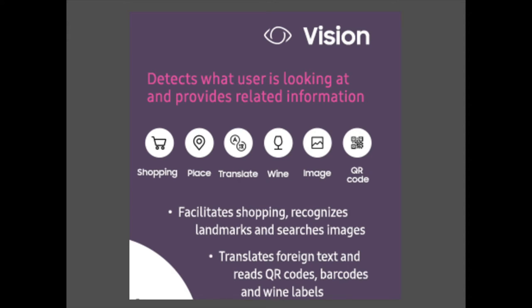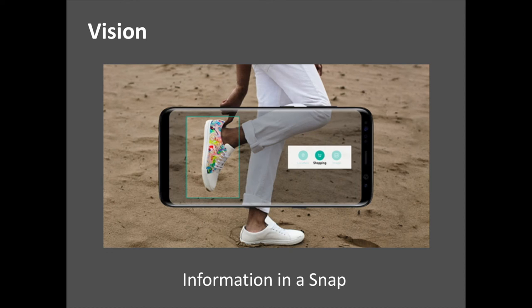Bixby uses the image to determine that the structure is a famous art museum and can then provide related information, such as the museum's address, phone number and website. At lunch, the user can also leverage vision to get a translation of the French menu in their own native language, or learn more information about the bottle of wine they would like to order.